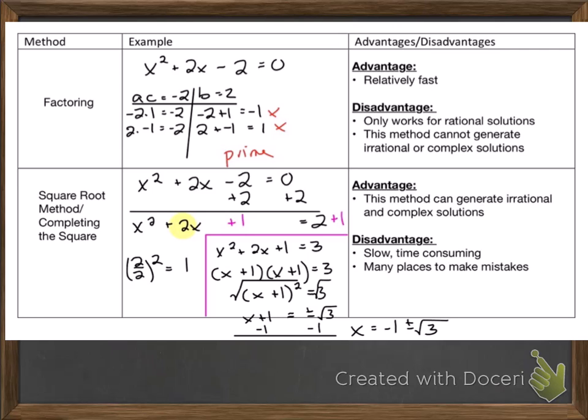The bad thing about it is that it only gives us rational solutions. So if there is a real solution that is irrational, factoring will not give it to us, and it will definitely not generate complex solutions. So remember, a complex number is something in the form a plus bi. So anything that has an imaginary component, this method cannot be used.